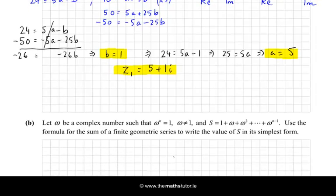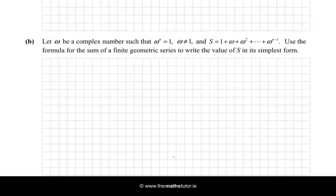Now, the next question, what have we got? Let ω be a complex number such that ω raised to the power of n is 1, and that ω is not 1. And S is the sum of 1 plus ω plus ω squared plus all the way up as far as ω to the power of n minus 1. Use the formula for the sum of finite geometric series to write the value of S in its simplest form. Okay, well, we need the sum of a finite geometric series.